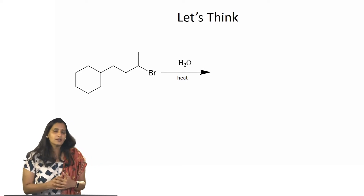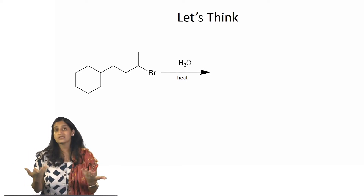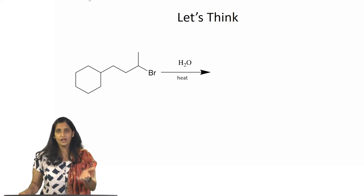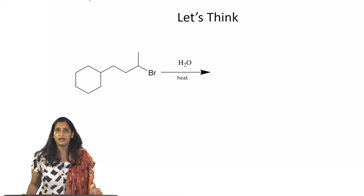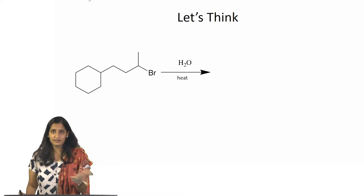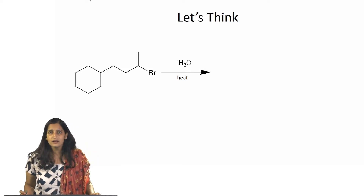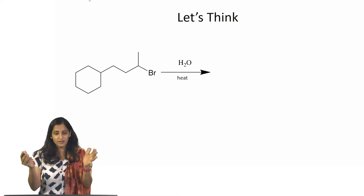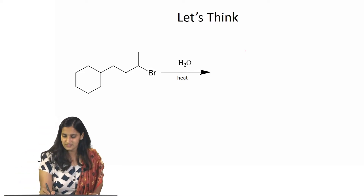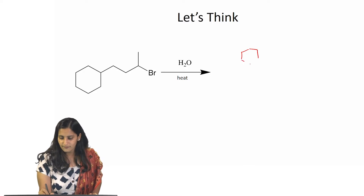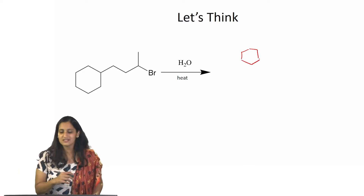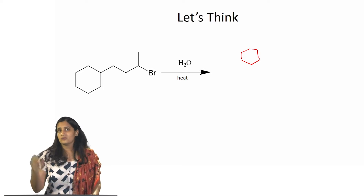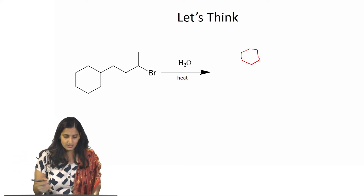Imagine that you are in a lab and you are trying to synthesize a particular compound. The example I have taken here is that of an alkyl bromide, and when it reacts with water — let's say you heat it a little bit — what kind of products can this really form? If you remember from the last course, we discussed the reactions of alkyl halides, and alkyl halides can really undergo substitution or elimination reactions.